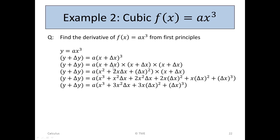We've done this before: (x plus delta x) times (x plus delta x) equals x squared plus 2x delta x plus delta x squared. We now multiply all of that by (x plus delta x). The first term x squared by x gives x cubed. The term 2x delta x by x gives 2x squared delta x, and 2x delta x by delta x gives 2x delta x squared. Then delta x squared by x gives x delta x squared, and delta x squared by delta x gives delta x cubed. Collecting like terms: x squared delta x and 2x squared delta x combine to give 3x squared delta x, and 2x delta x squared and x delta x squared give 3x delta x squared.